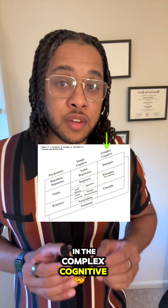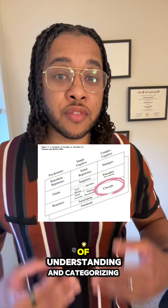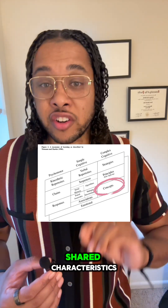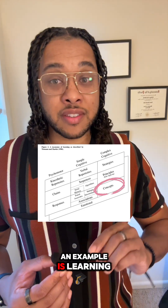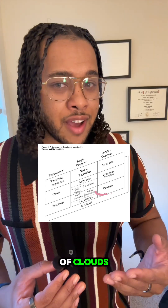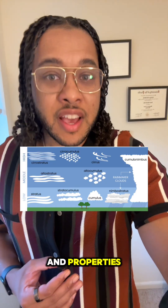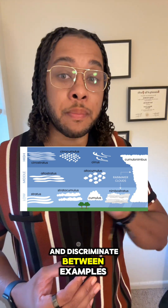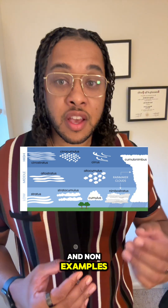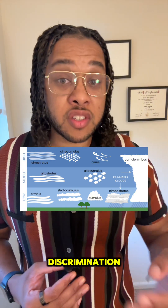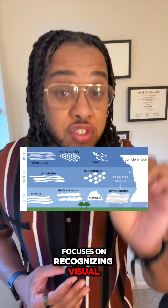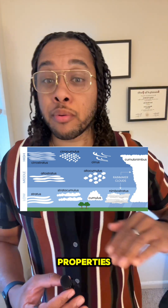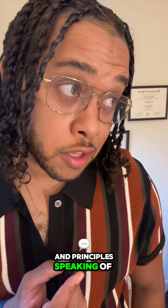In the complex cognitive column, first is concept learning — the process of understanding and categorizing objects, events, or ideas based on shared characteristics. An example is learning to identify different types of clouds based on their appearance and properties, gaining the ability to generalize to new examples and discriminate between examples and non-examples. This may sound like multiple discrimination, but multiple discrimination focuses on recognizing visual differences, whereas concept learning involves understanding underlying properties and principles.